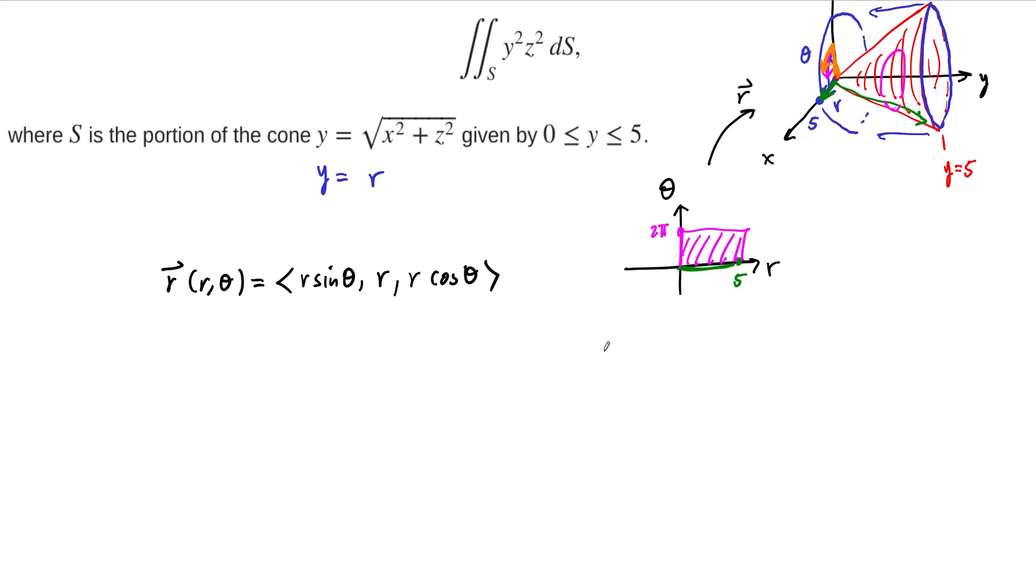So we need to do that next. The surface area element nu of r and theta, that's just equal to r sub r crossed with r sub theta. And we need to compute these. So r sub r is going to be sine of theta, one, cosine of theta, crossed with r sub theta. So that's going to be r cosine of theta, zero, minus r sine of theta. And we need to take the cross product of these two.